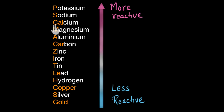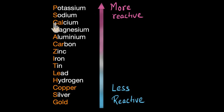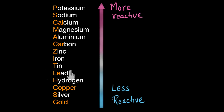For example, calcium is above aluminium, so calcium is more reactive than aluminium and can displace it from its compound. Whereas calcium is lower than sodium, meaning sodium is more reactive than calcium — so sodium can displace calcium. With the help of this reactivity series, let's try to solve a couple more problems.